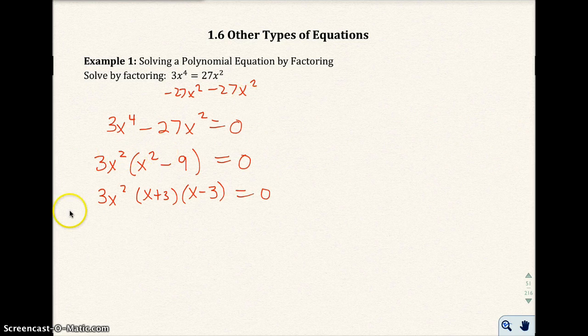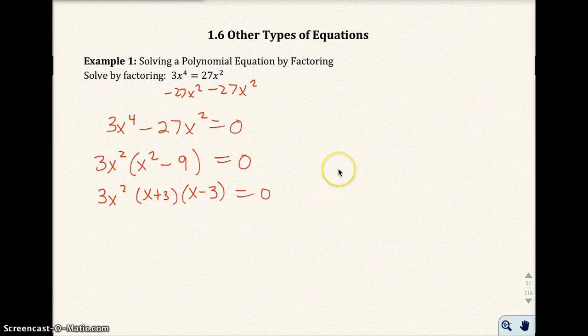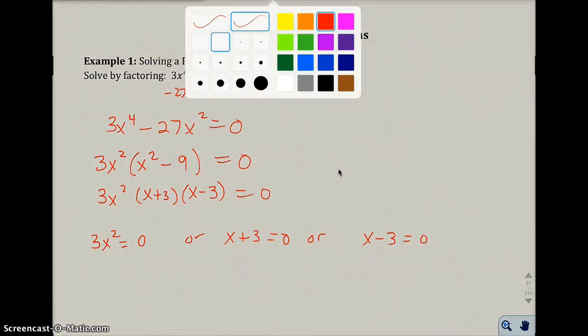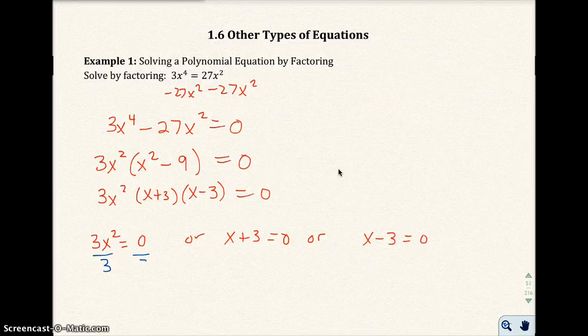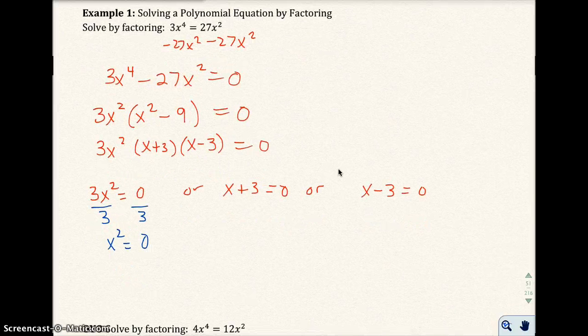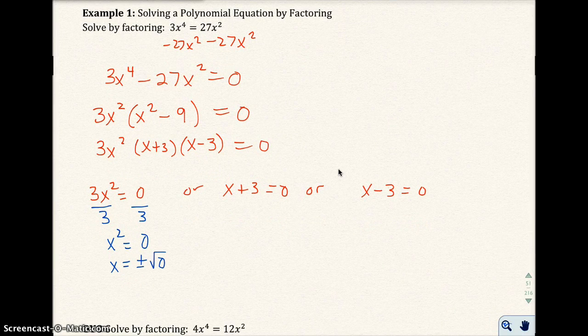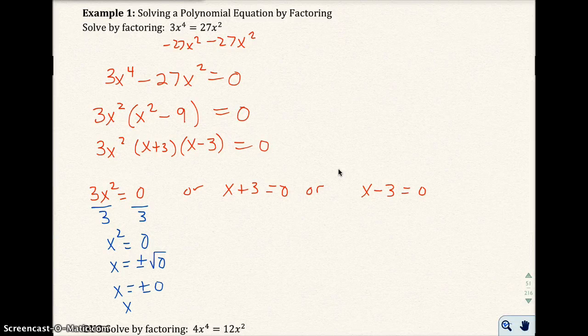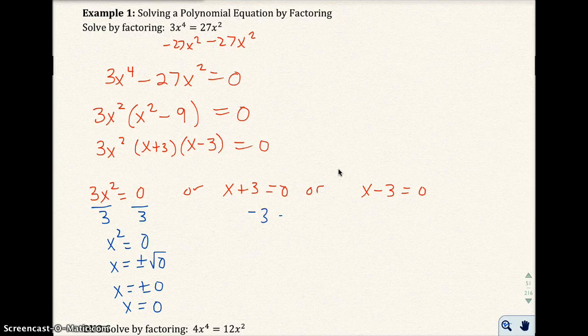So now I have three factors equal to zero. I solve each of these. I divide by 3 and get x squared equal to zero. Then x equals plus or minus square root zero. I'm going to use the square root property, even though we know the answer is zero. I want to show it came from the square root property. So x equals zero. Here I get x equals negative 3, and then I get x equals 3.